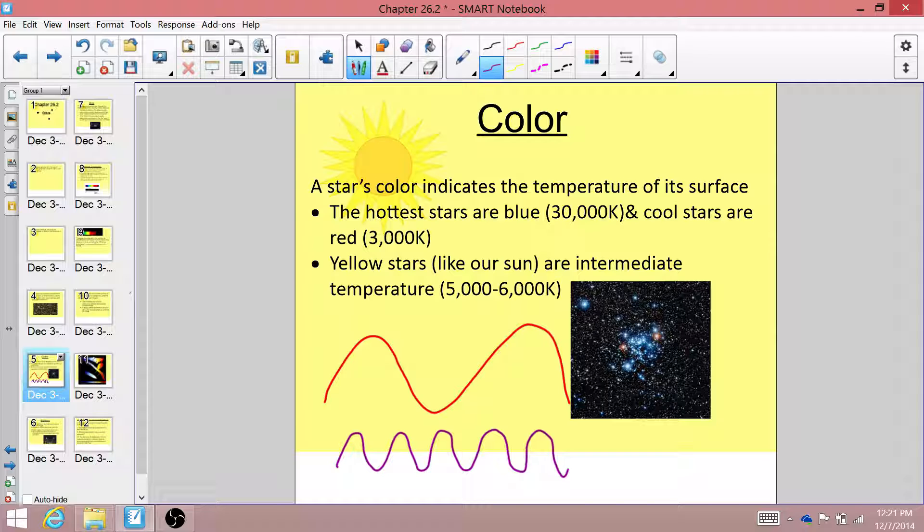Well, it turns out, as you heat an object up, it will reach a point where it will start to glow and it will let off light. And the first light it starts to give off is red, and then orange, and yellow, and green, and blue, and all the way up to violet, and even beyond to light that we can't even see, like x-rays.